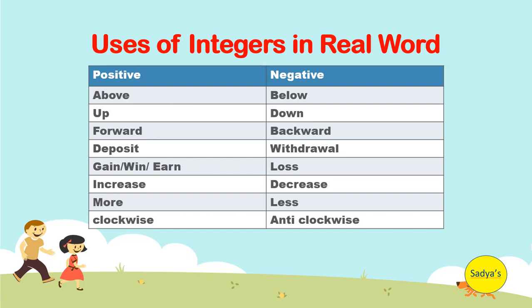For example, if you submit money in bank, you deposit. Your bank balance will increase. Positive. And if you withdraw money, your bank balance will decrease. Negative.